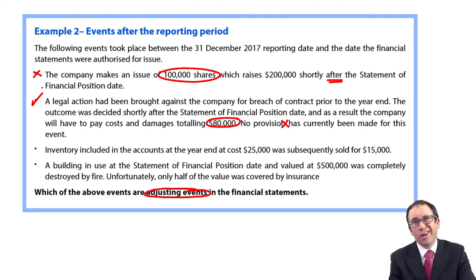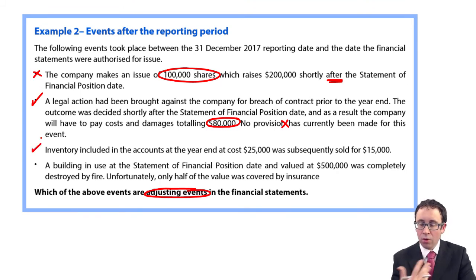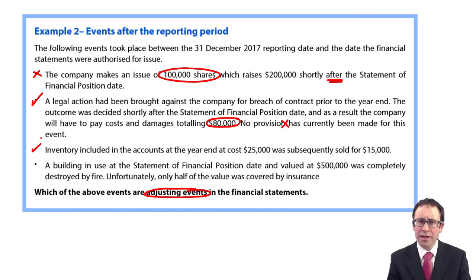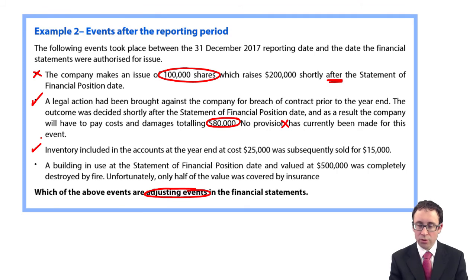The third one — and it's the one you see most of the time — inventory included at $25,000 and sold for $15,000. That is an adjusting event, so you would adjust your inventory down to $15,000 — $15,000 in the statement of financial position and $15,000 in the statement of profit or loss.